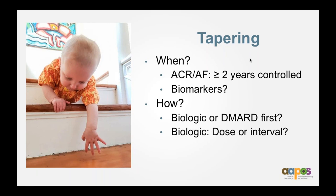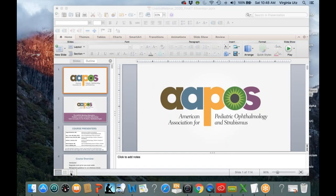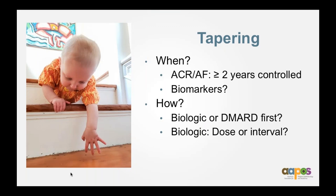There was a question: what is enthesitis-related JIA? It's arthritis when an individual has arthritis and/or enthesitis — inflammation where the tendons and ligaments insert onto the bones, so they feel like they have joint pain but it's actually tendon inflammation. This tends to be on the spectrum of people who will develop ankylosing spondylitis in adulthood. It tends to be boys more than girls with an older onset (over six years old). They are often at risk for significant axial, spinal involvement in adulthood and tend to be really stiff in the morning, improving as they move around.